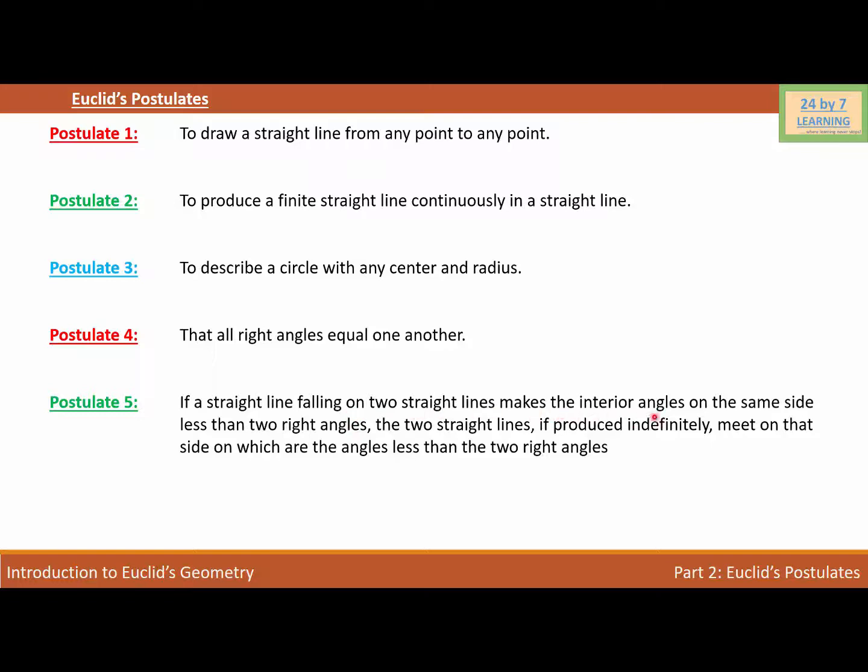...the two straight lines, if produced indefinitely, meet on that side on which the angles are less than the two right angles. So basically, Euclid gave these five postulates.